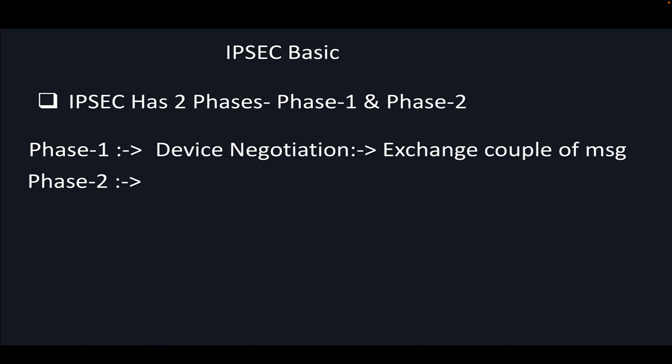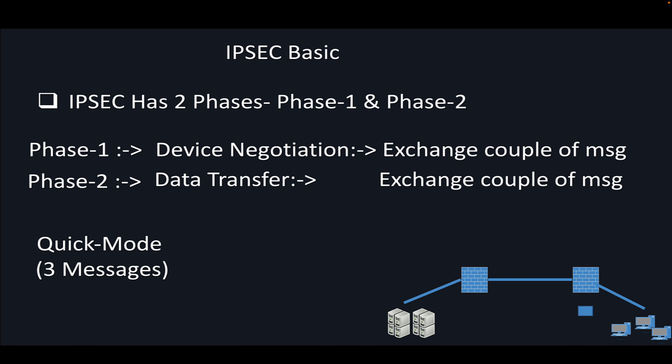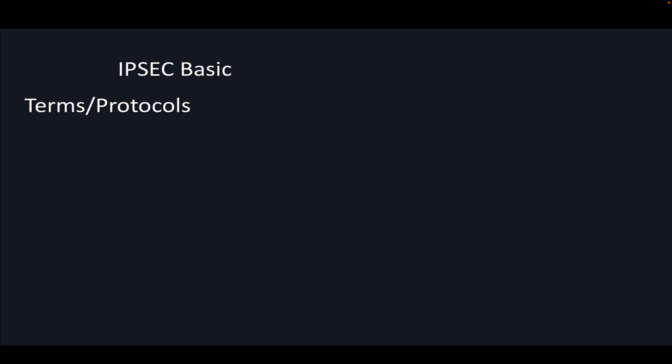Phase two is for transferring the data. A couple of messages are exchanged so that the phase two tunnel comes up. You can consider phase two as a tunnel inside a tunnel — phase two goes inside phase one, so it's more secure. In phase two there are three messages exchanged and only one mode: quick mode. Once phase one is up and phase two is up, data transfer takes place and the branch users can start accessing applications.